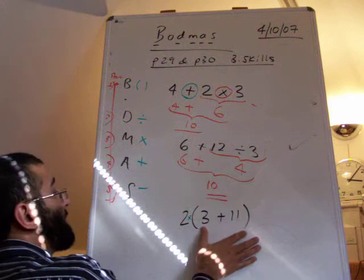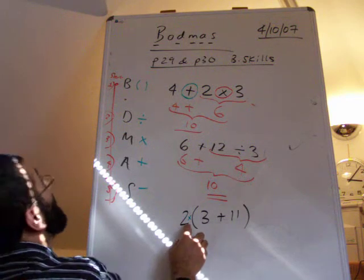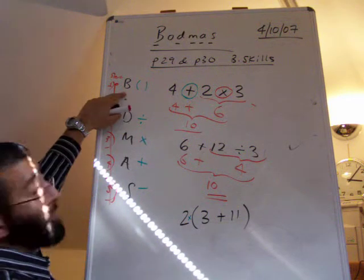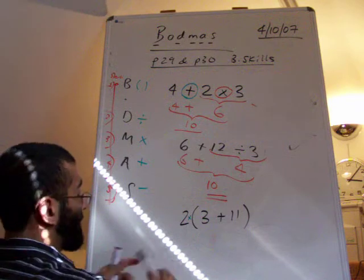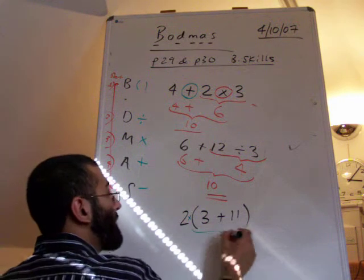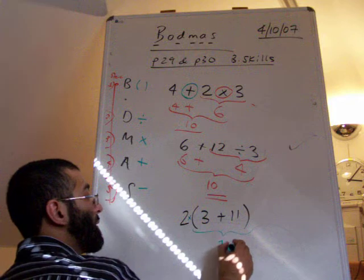Now, if you look at here we've got brackets and we've got a multiplier. Well brackets are more powerful than a multiplier. So we do the brackets first. So we do whatever is inside the brackets. Inside the brackets is 3 add 11. That'll give you 14.